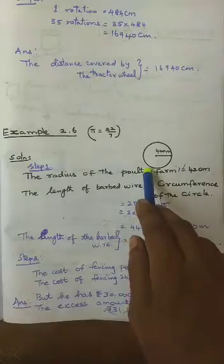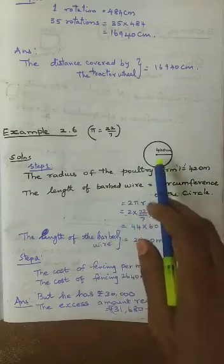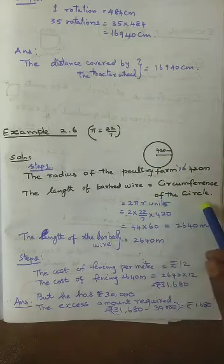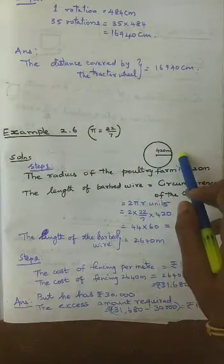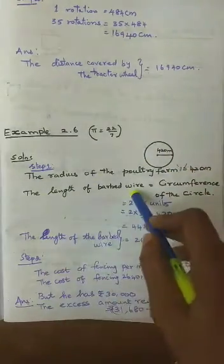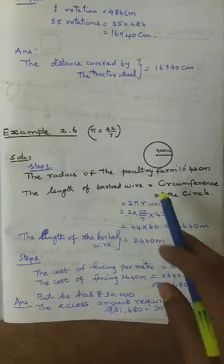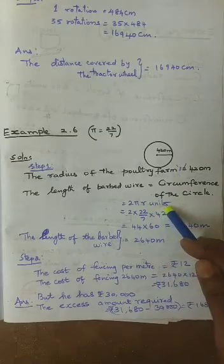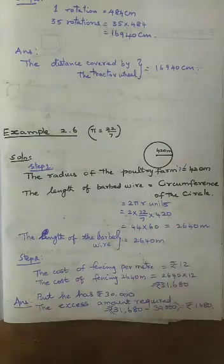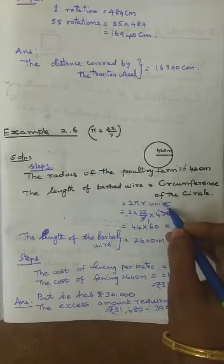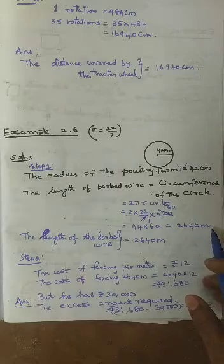The length of the barbed wire needed to fence around the poultry farm equals the circumference of the circle. The circular poultry farm has radius 420 m. We need to find the circumference, which is the length of wire placed around the farm. Circumference = 2πr = 2 × (22/7) × 420. Cancel 7: 420 ÷ 7 = 60. So 44 × 60 = 2,640 m. The length of barbed wire required is 2,640 m.